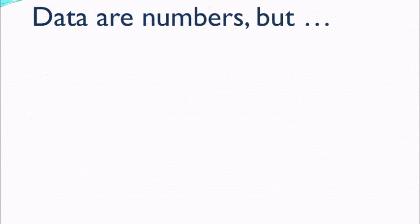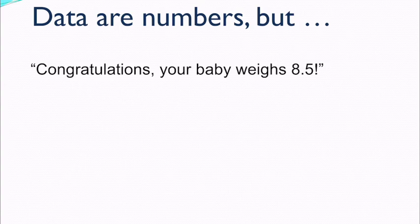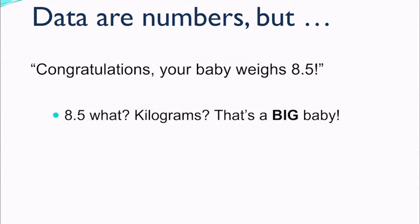Data are numbers, but it's really important that your number has a unit. Let's say you have a baby and I say congratulations, your baby weighs 8.5. 8.5 what? 8.5 bananas? 8.5 kilograms? Because I'll tell you what, if it was 8.5 kilograms, because one kilogram is about two pounds, that's a pretty big baby. That could be statistically significant. That'd be an outlier, which we'll talk about more in chapters one and two.